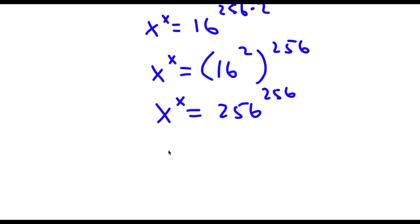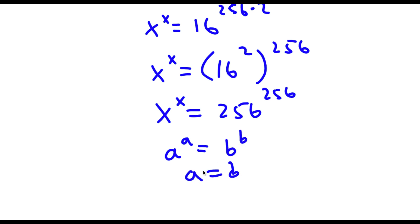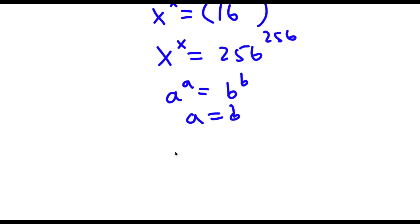And if I have something in the form a to the power of a is equal to b to the power of b, then this means that a is equal to b. And in this case, I have x to the power of x is equal to 256 to the power of 256, meaning x is equal to 256.